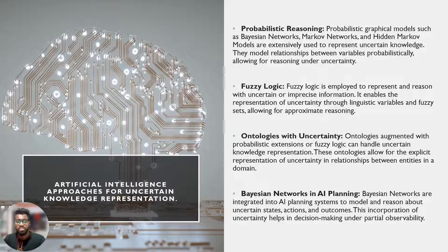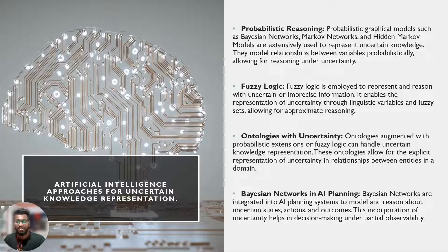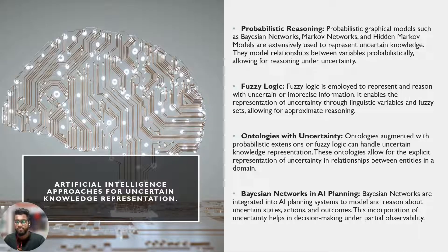Now we'll look at artificial intelligence approaches for uncertain knowledge representation. Probabilistic graphical models such as Bayesian networks, Markov models, and Hidden Markov Models are extensively used to represent uncertain knowledge. They model the relationships between variables probabilistically, allowing for reasoning under uncertainty. Fuzzy logic is also employed to represent and reason with uncertain or imprecise information, enabling the representation of uncertainty through linguistic variables and fuzzy sets, allowing for approximate reasoning.